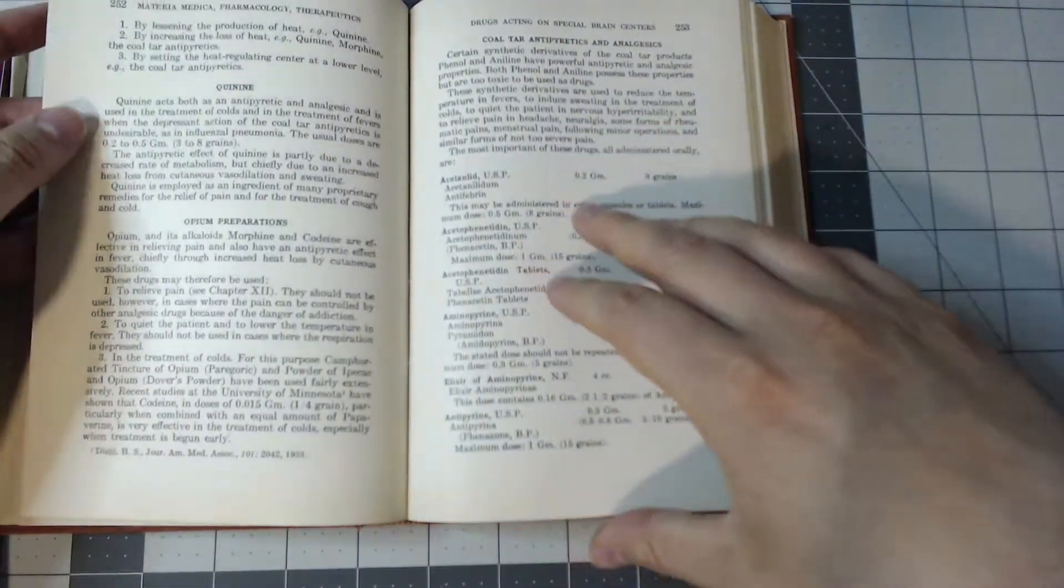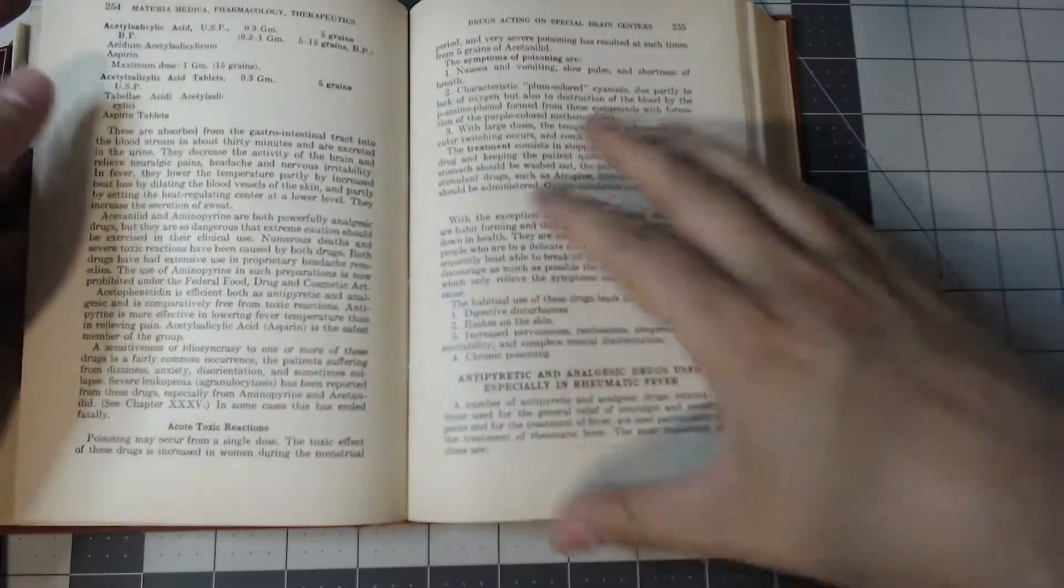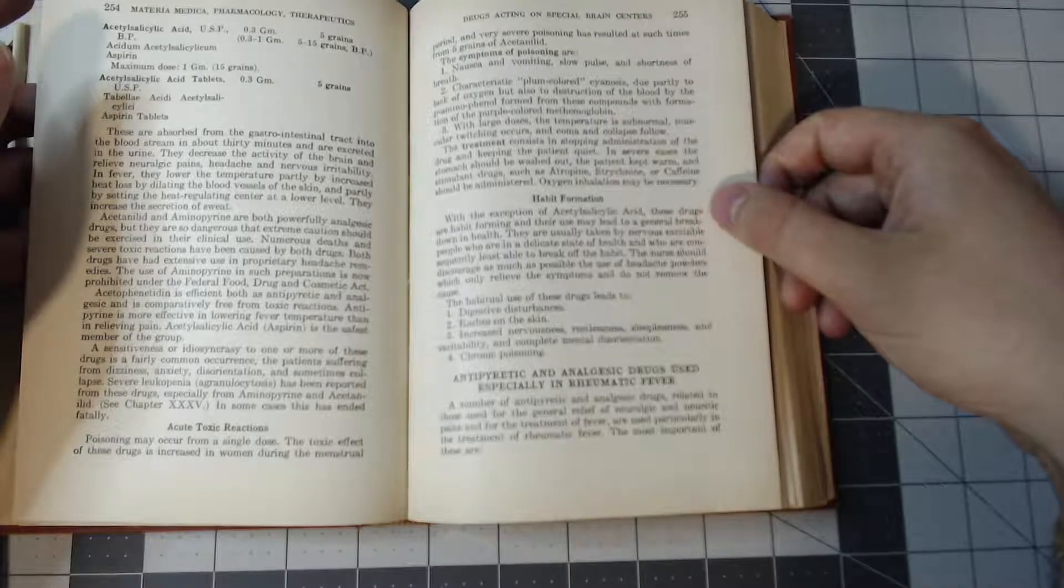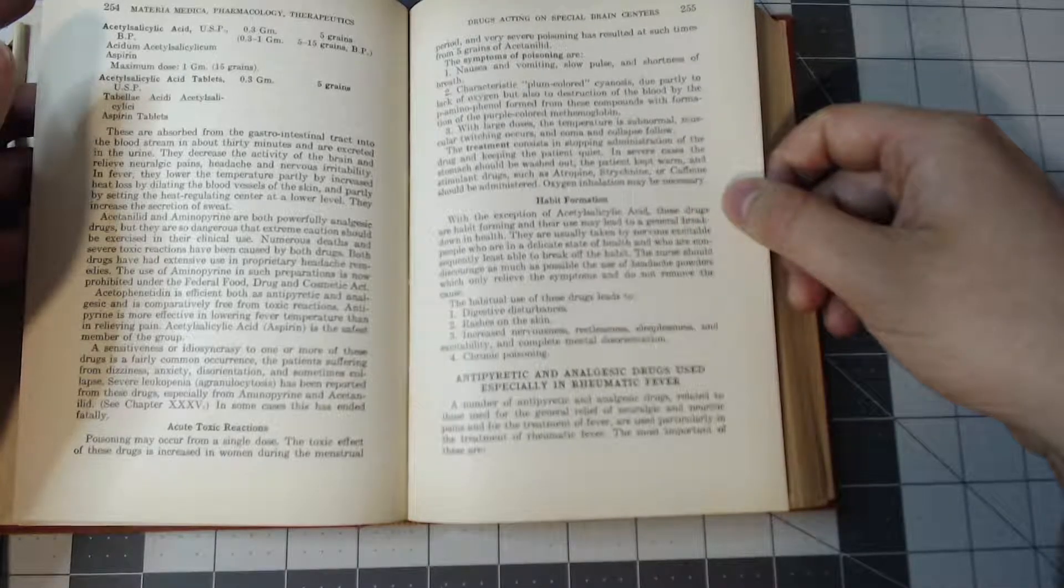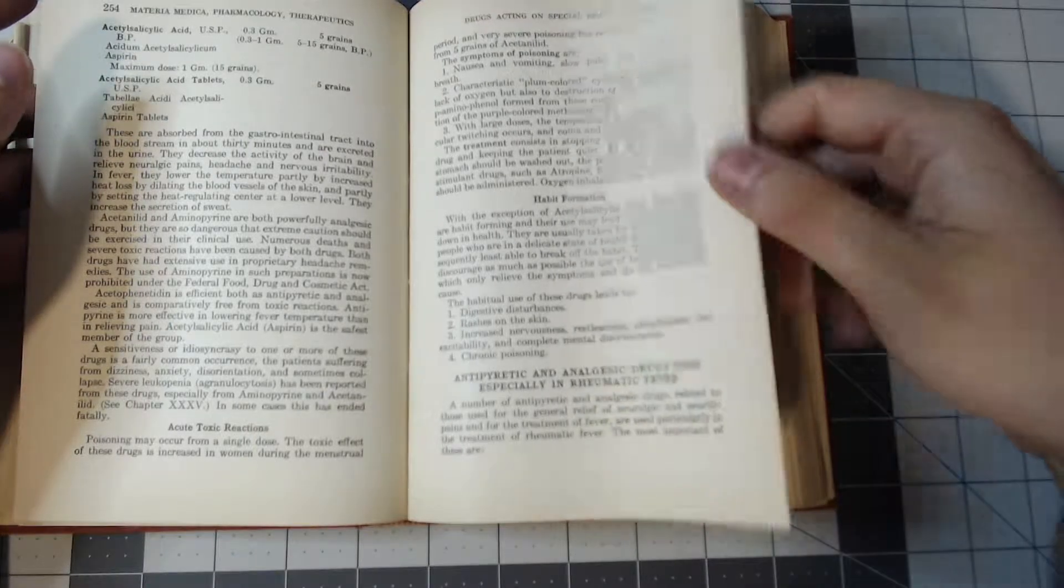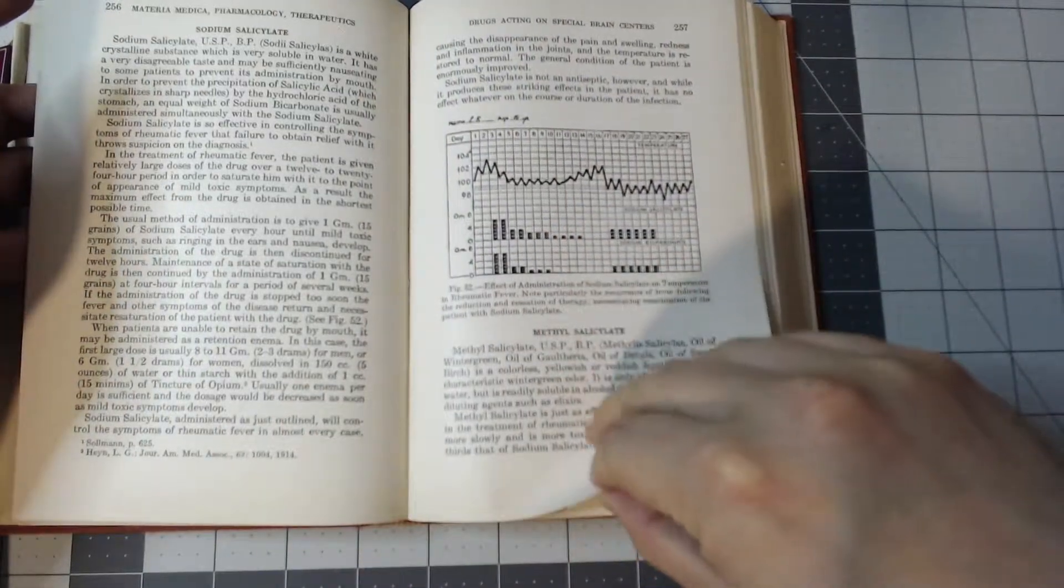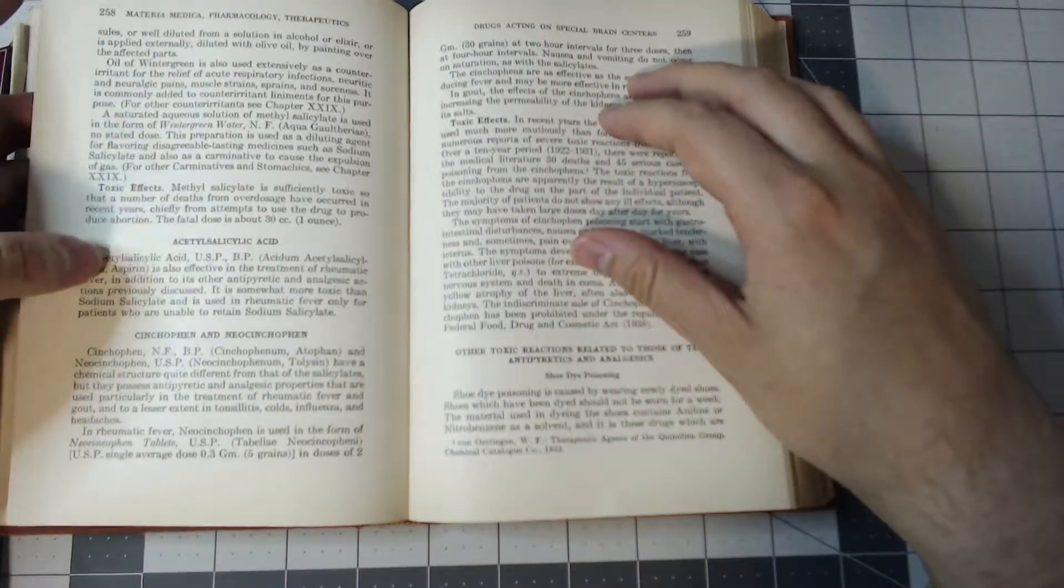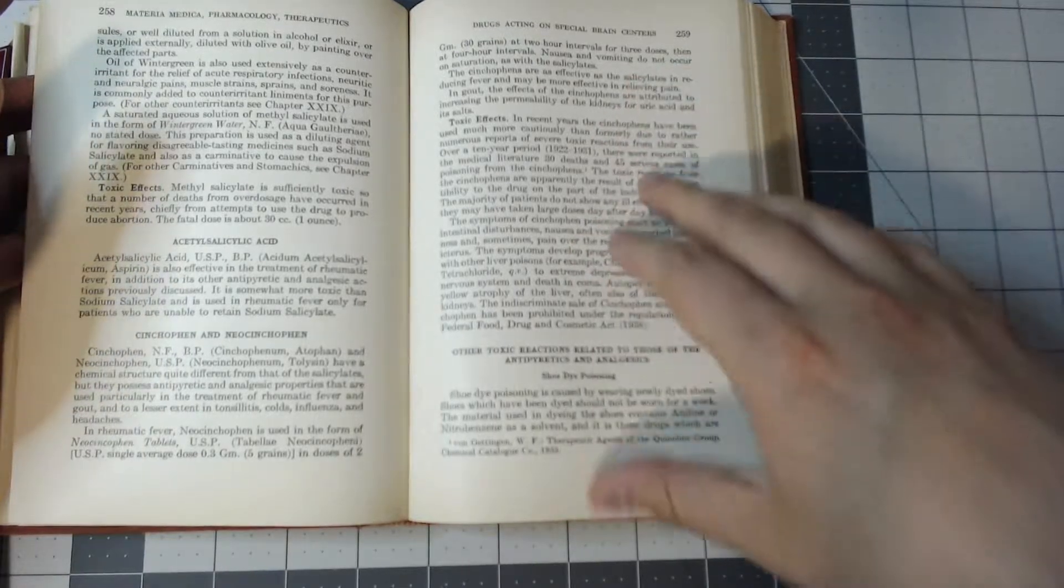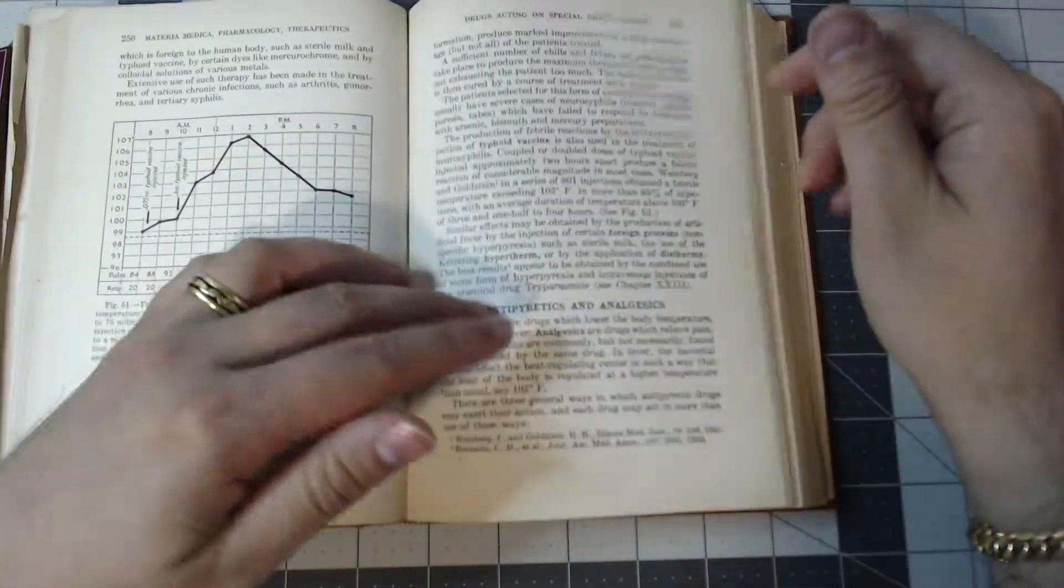And even going into the antipyretics section, you have opium and quinine. It's interesting actually talking about habit formation back then, especially, we talk about the opioid epidemic these days. So it's just really like methyl salicylate, we have acetylsalicylic acid. I don't even know some of these other ones that they mentioned throughout.